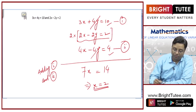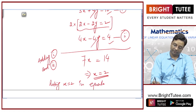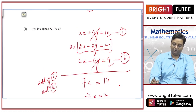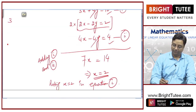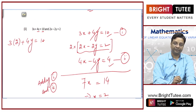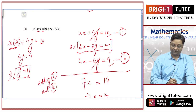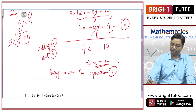Now, putting x equal to 2 in equation 1: 3 into 2 plus 4 into y is equal to 10. This is 6, so 4y is equal to 10 minus 6 equals 4, hence y is equal to 1. So, x is equal to 2 and y is equal to 1 is my answer.